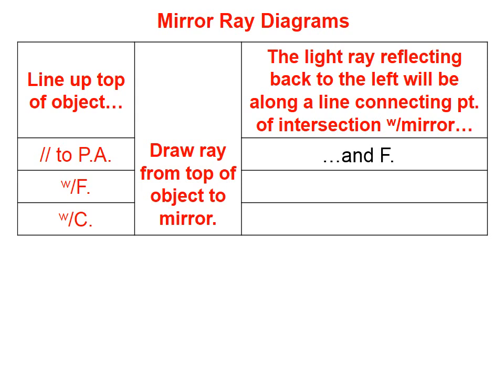If you line up the top of the object with the focal point and draw a ray from the top of the object to the mirror, the light ray reflecting back to the left will be along a line connecting the point of intersection with the mirror, parallel to the principal axis.